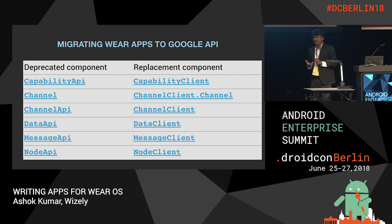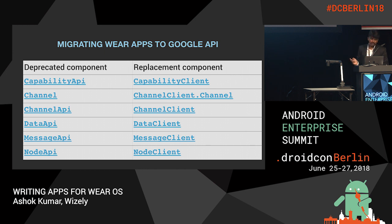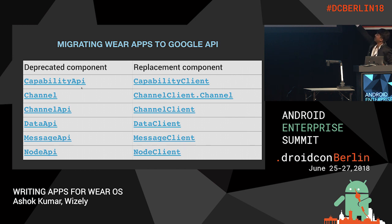If we are migrating our mobile app or existing wearable app to the Google API, there are deprecated components and replacement components. The deprecated capability API has a replacement capability client. The channel has a replacement called channelclient.channel. Channel API has channel client. Data API has data client. Message API has a replacement called message client.